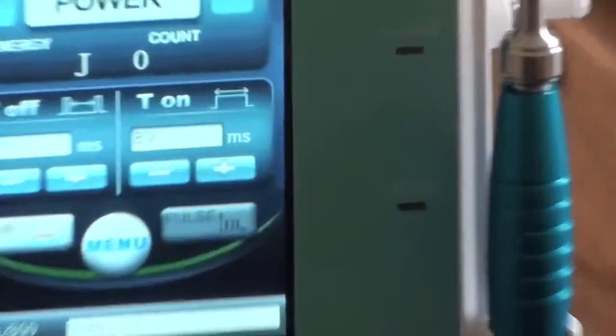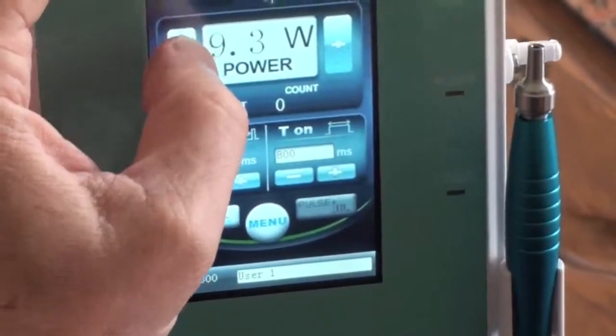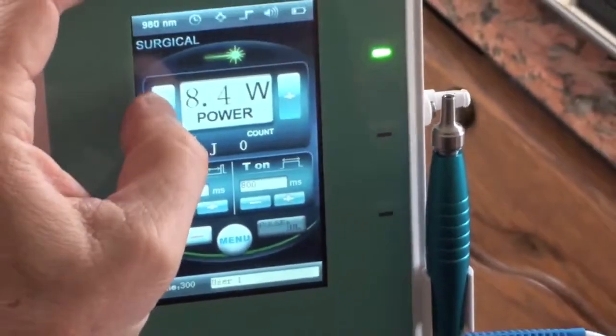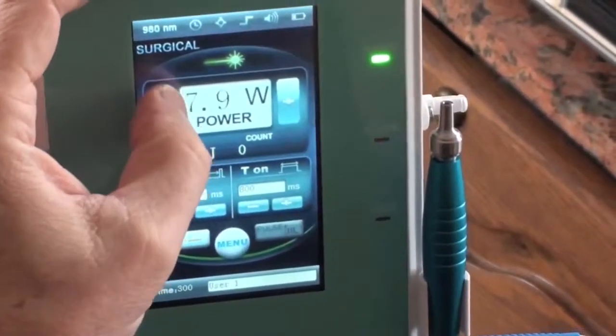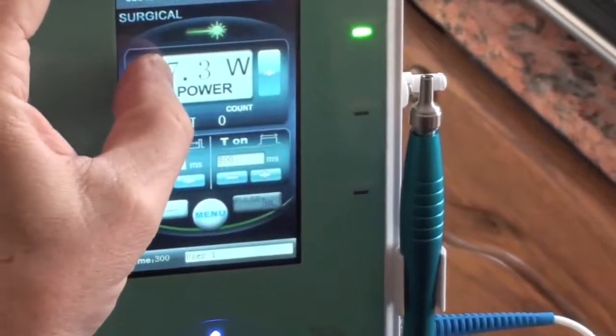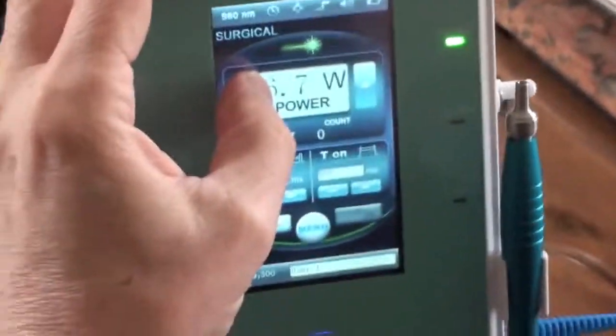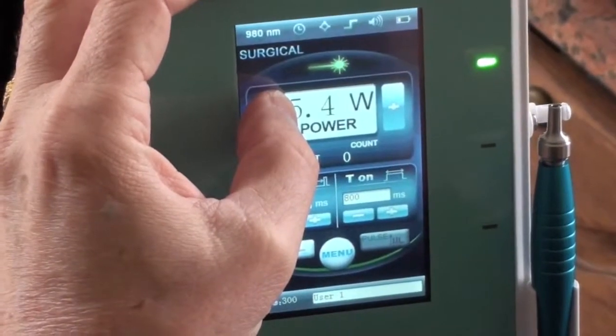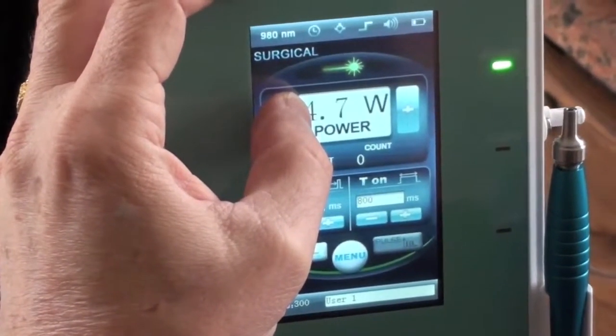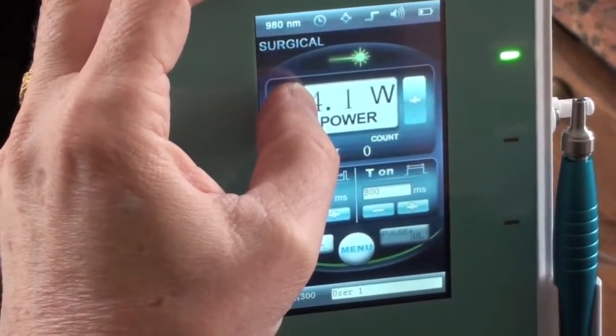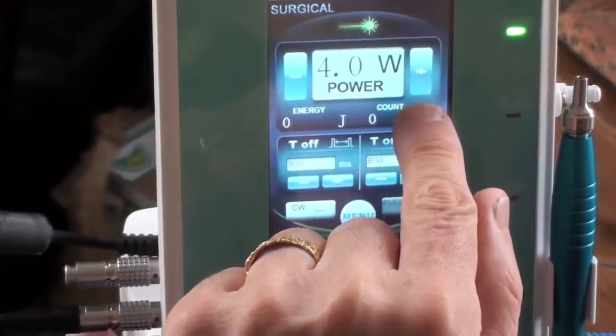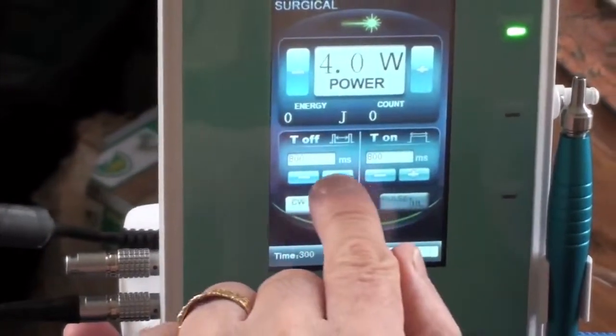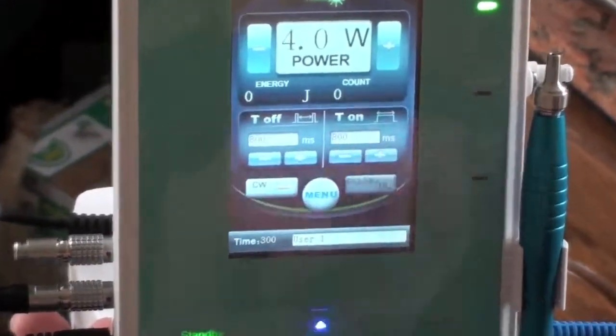Now, for some reason, it's too warm. We're also going to do it anywhere from four to six watts. We're going to start at four. You can always go up. So we have 400 watts. Excuse me. Four watts. 800 milliseconds on. 800 milliseconds off.